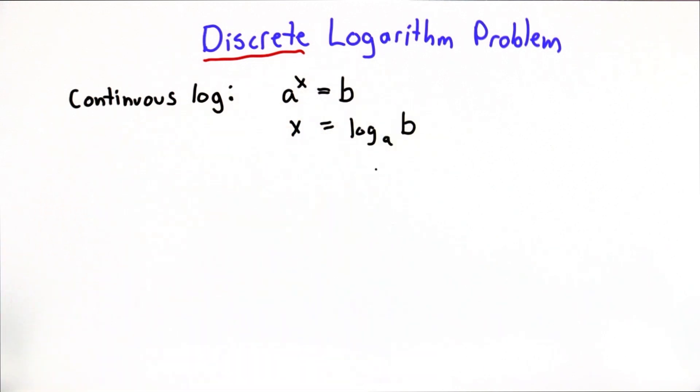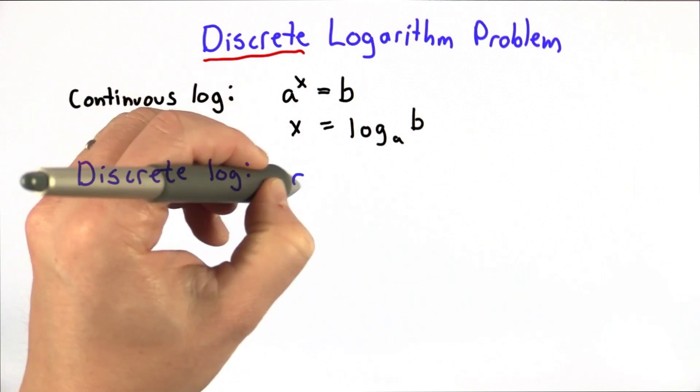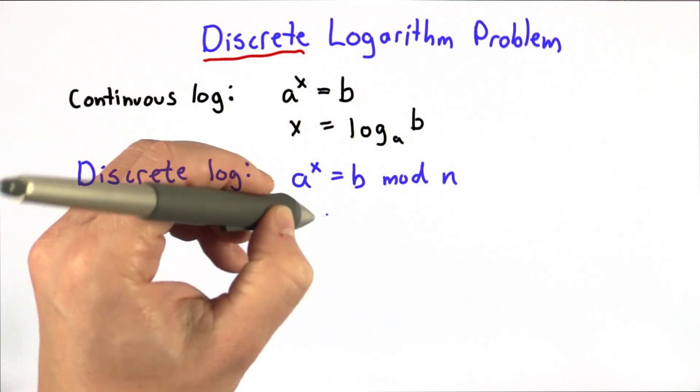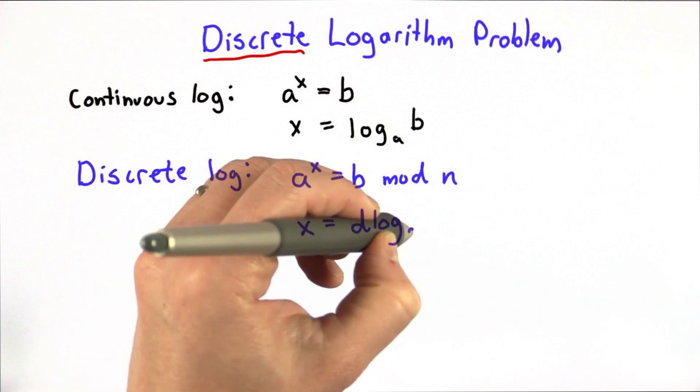One of the earliest uses of computers was to compute these tables of logarithms. With discrete numbers, this gets much more interesting. So now we have a to the x equals b modulo of some value n, and our goal is to solve for x, which is the discrete log base a of b.